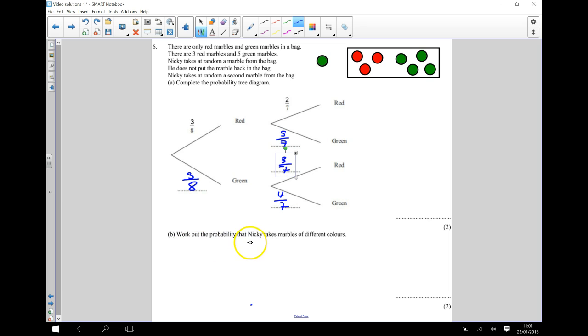Part B says work out the probability that Nicky takes marbles of different colours. So in order for him to take marbles of different colours, it's either going to be red, green. So we can write that as the probability of red and then green, or green, red. The probability of green and red.